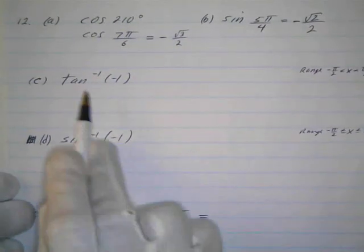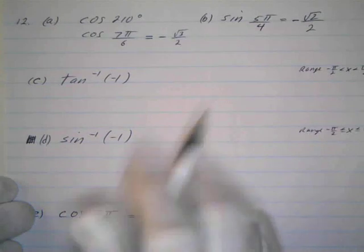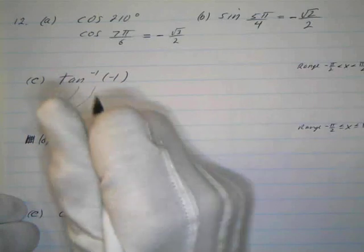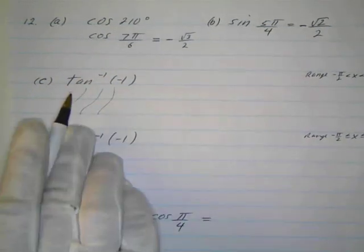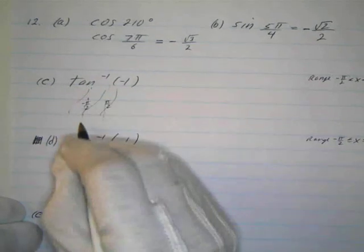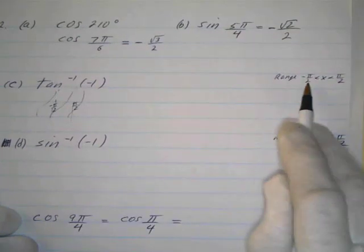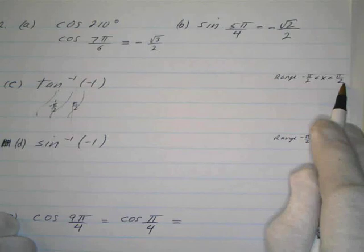Now here's the inverse tangent. Understand that in order for a function to have an inverse, it has to be one-to-one. Trigonometric functions are periodic — the tangent just keeps repeating over and over — so we have to restrict the domain. We restrict the domain from -π/2 to π/2 so that little section is one-to-one. The domain of a function is the range of its inverse, so the range of the inverse tangent will be between -π/2 and π/2.